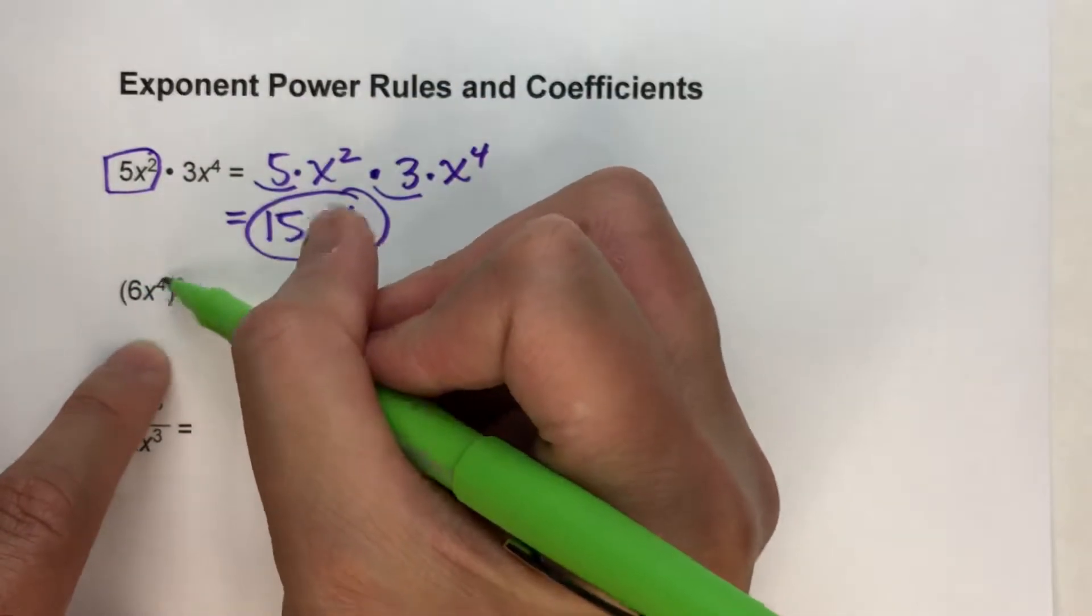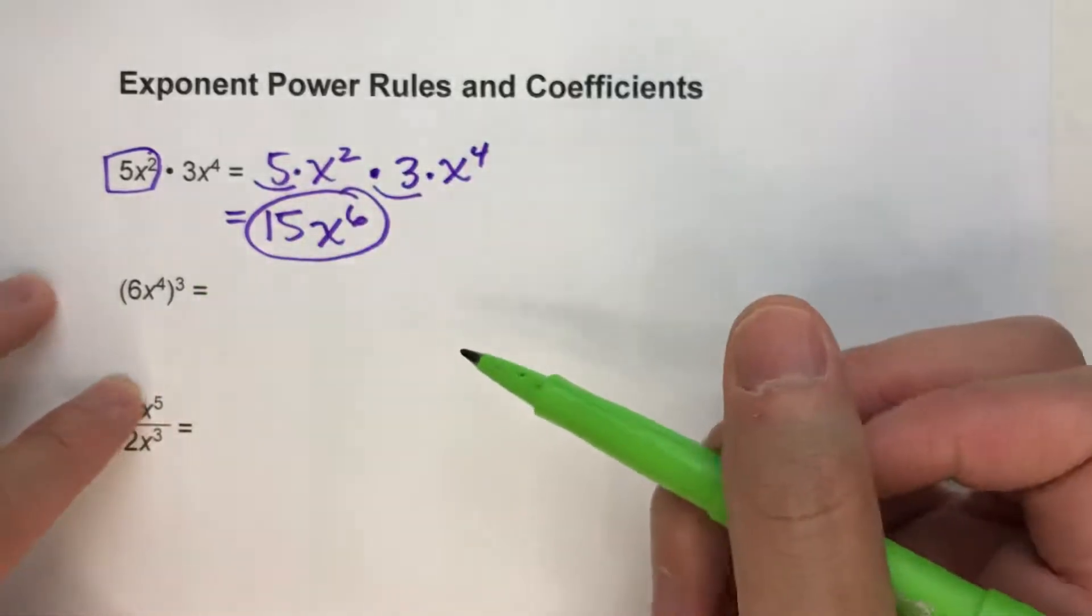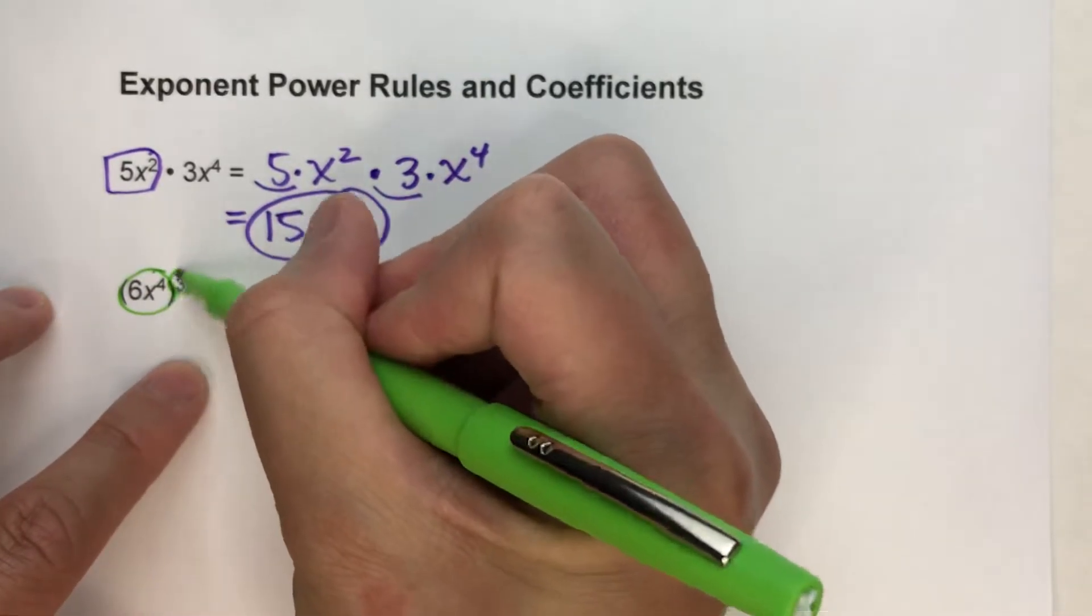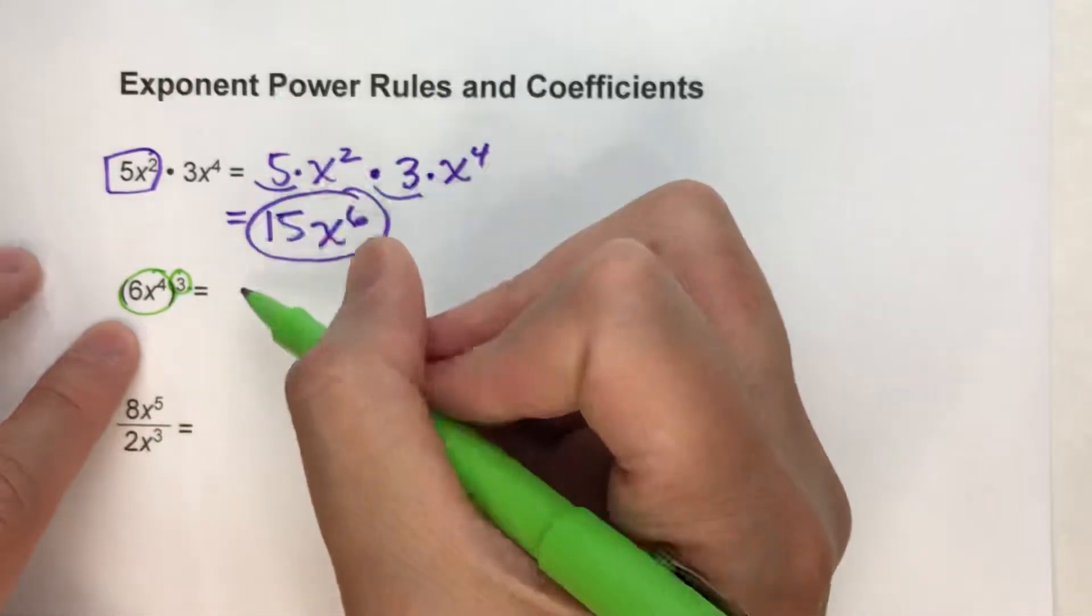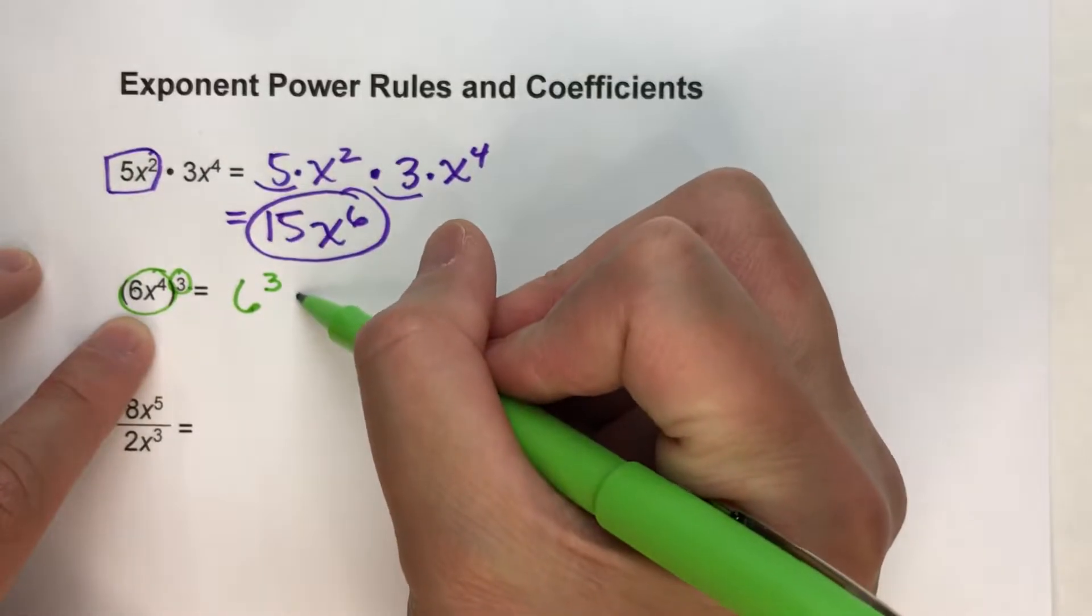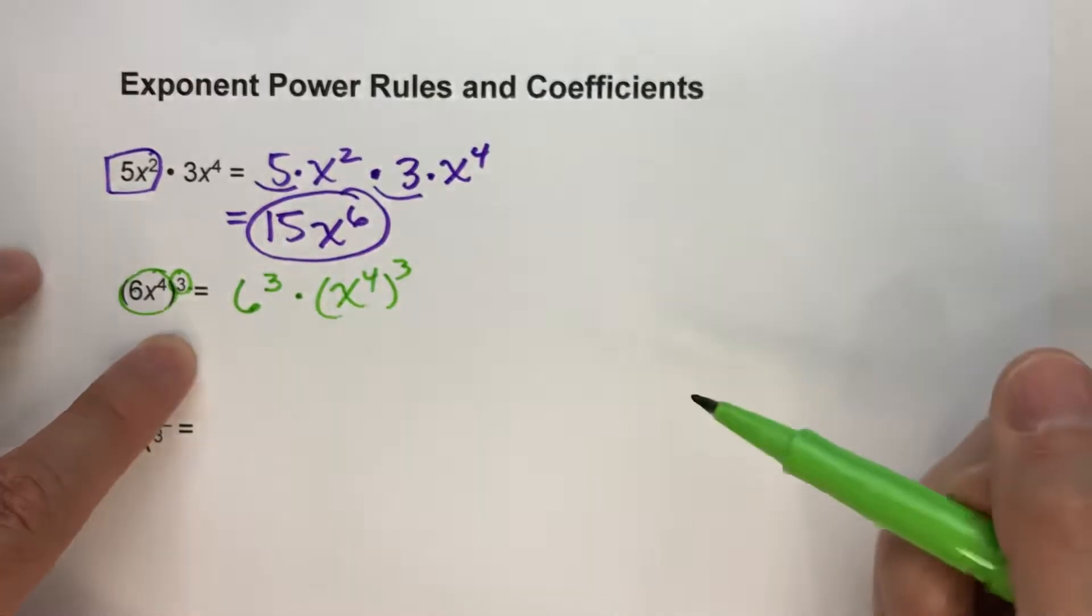But then that whole thing is being raised to the third power. So to simplify this, since this whole thing is being raised to the third power, what that means is I have to raise the 6 to the third power, and I also have to raise x to the fourth to the third power.